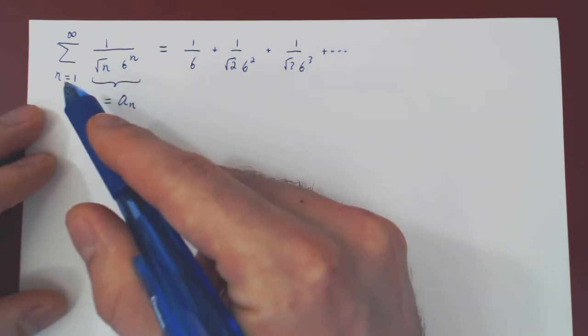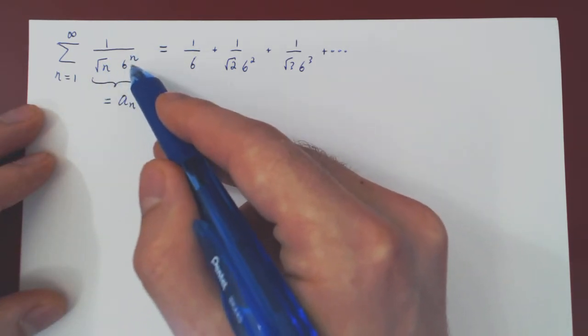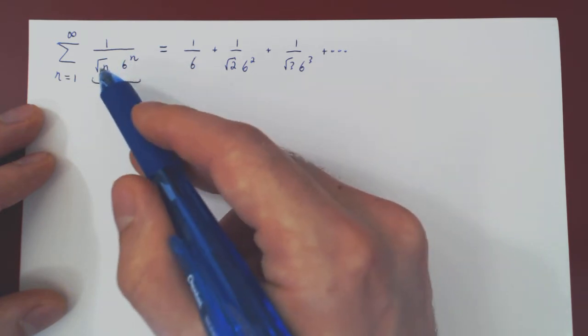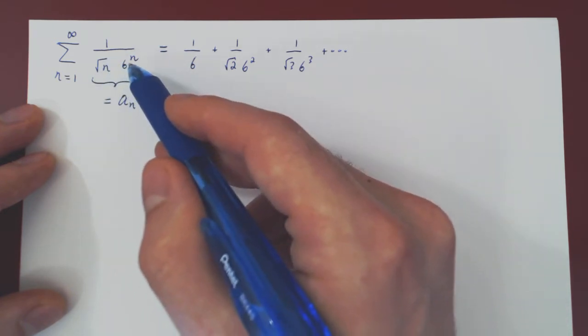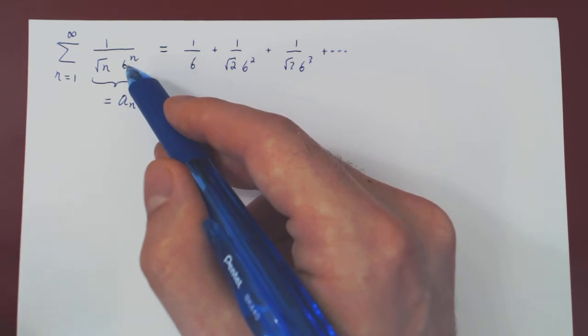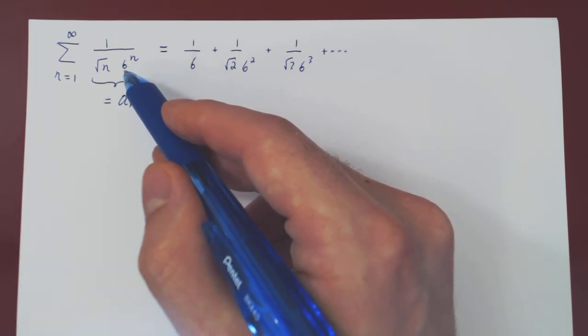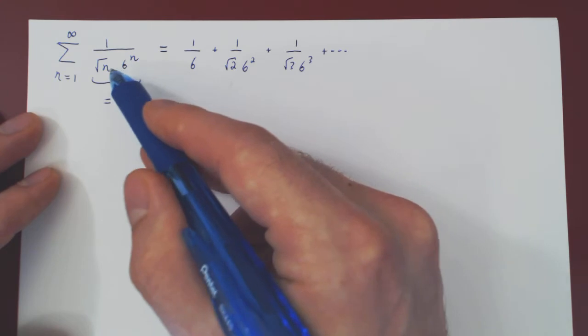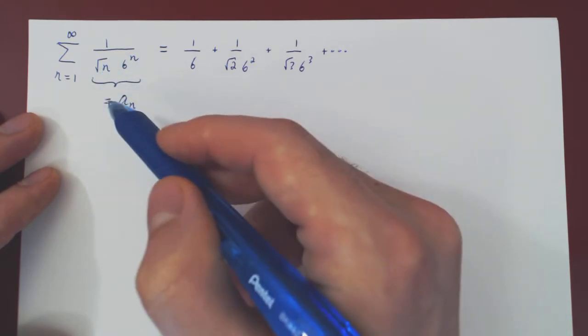Well, root of n is large when n is large, but 6 to the n is much larger than root of n, right? We have here a power of n, here an exponential function. If you recall our discussion about hierarchy of functions, exponential functions are much larger than power functions.